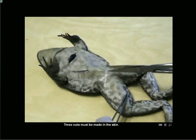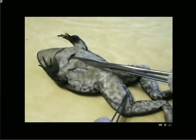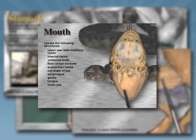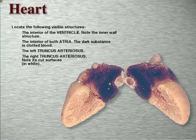Dissections of every major organ, as well as detailed sections on the head and leg, make the Digital Frog 2.5 a perfect replacement or supplement to a traditional wet lab. Detailed images and a comprehensive anatomy section of every major system in the body provide an understanding that cannot be gained from dissection alone.